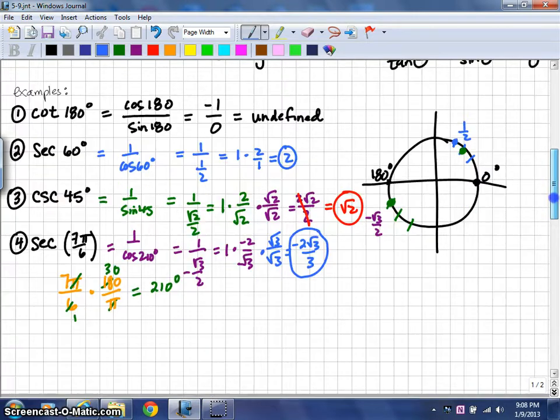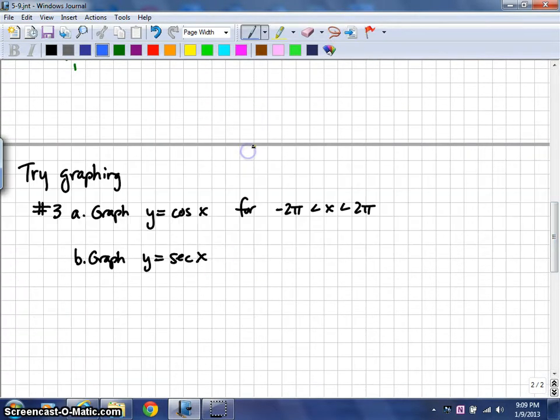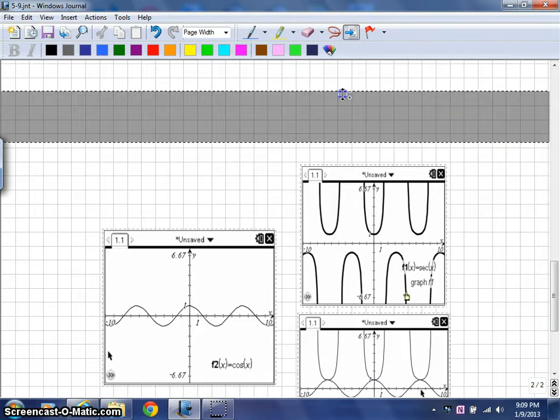Finally, I would like to look at a problem related to the graphing of these functions. And that relates to one of the homework questions that our students have in this lesson. It looks at question number 3 where they're asked to graph cosine and then the secant. So, I've already graphed these in advance. We'll just take a look at the results.